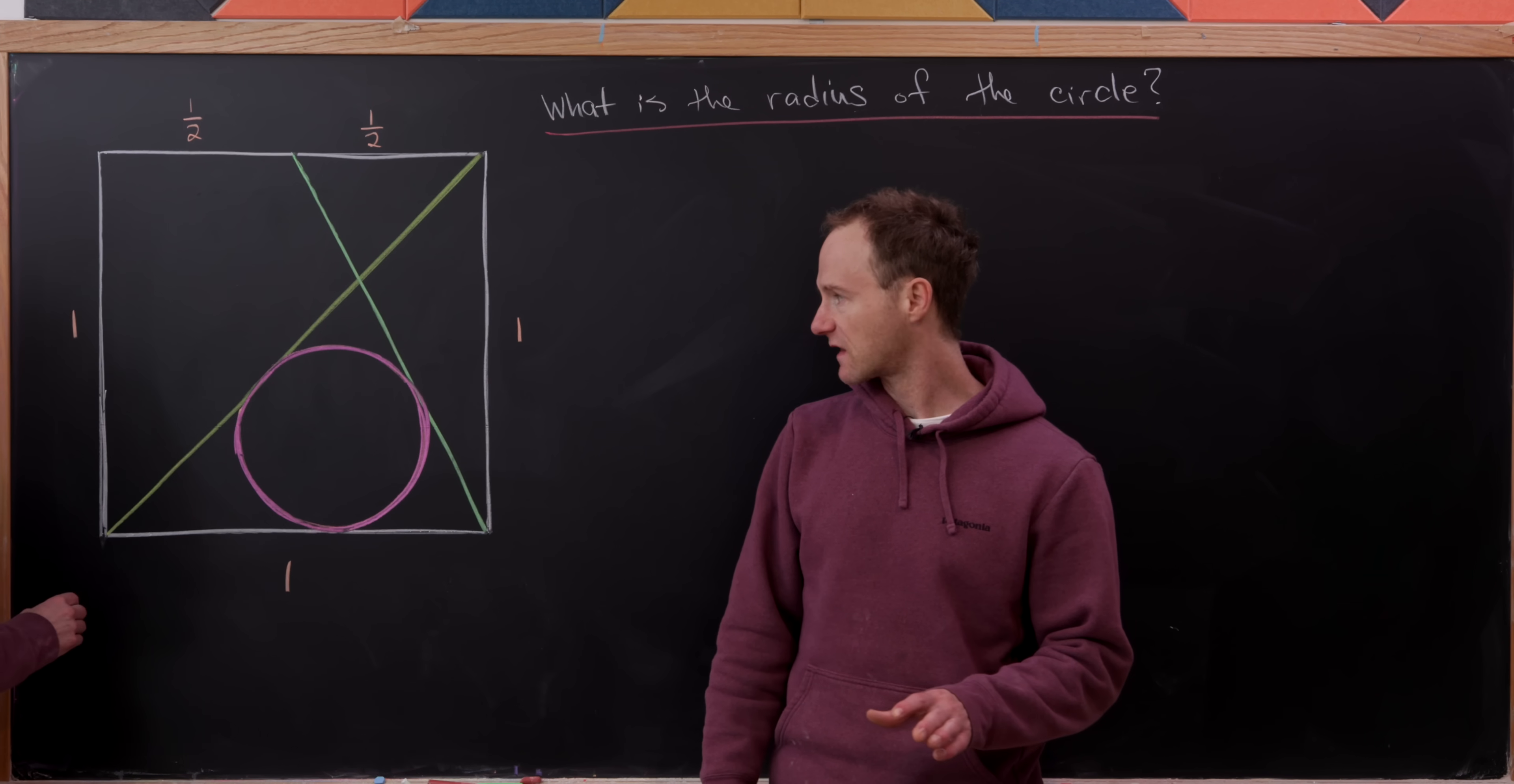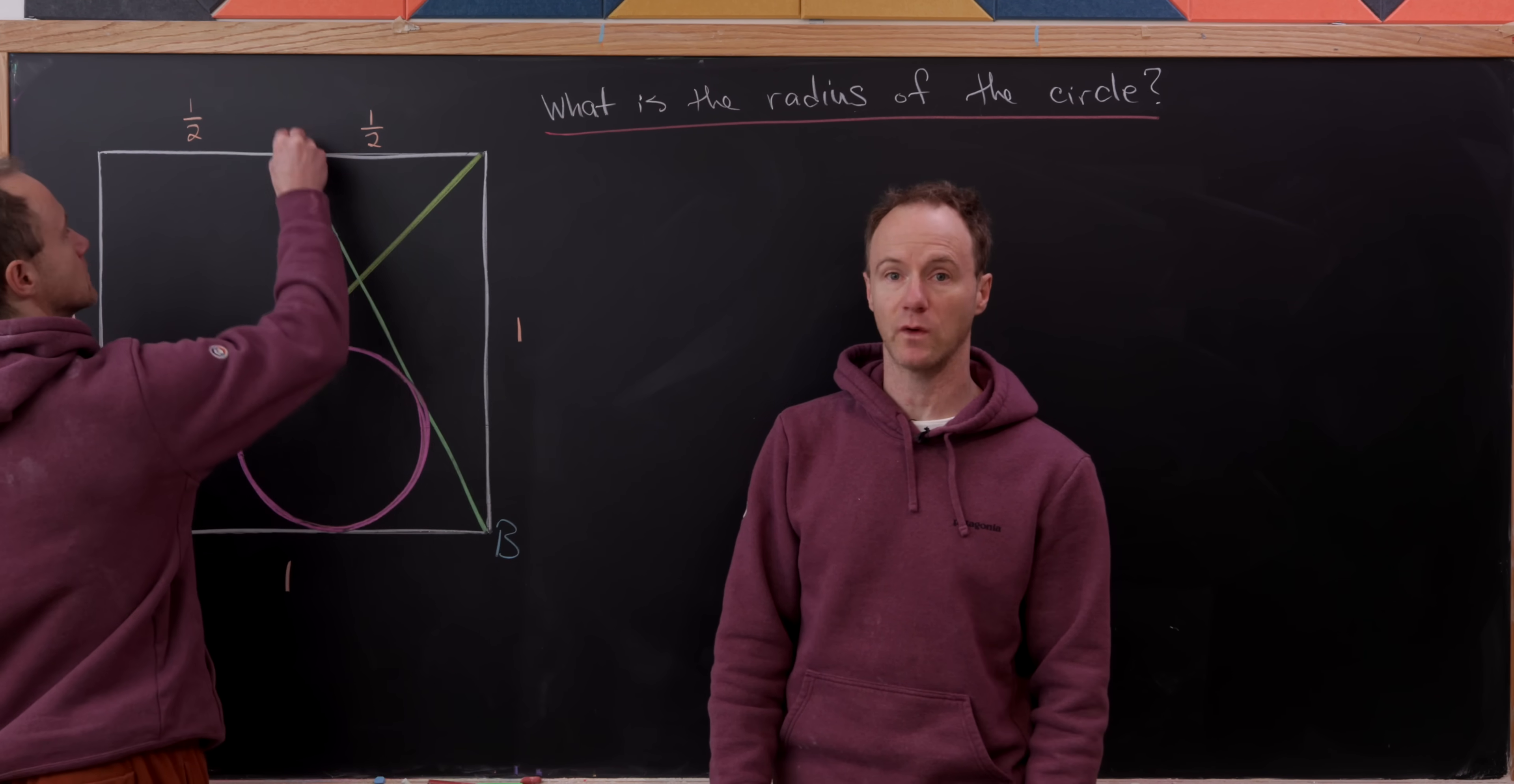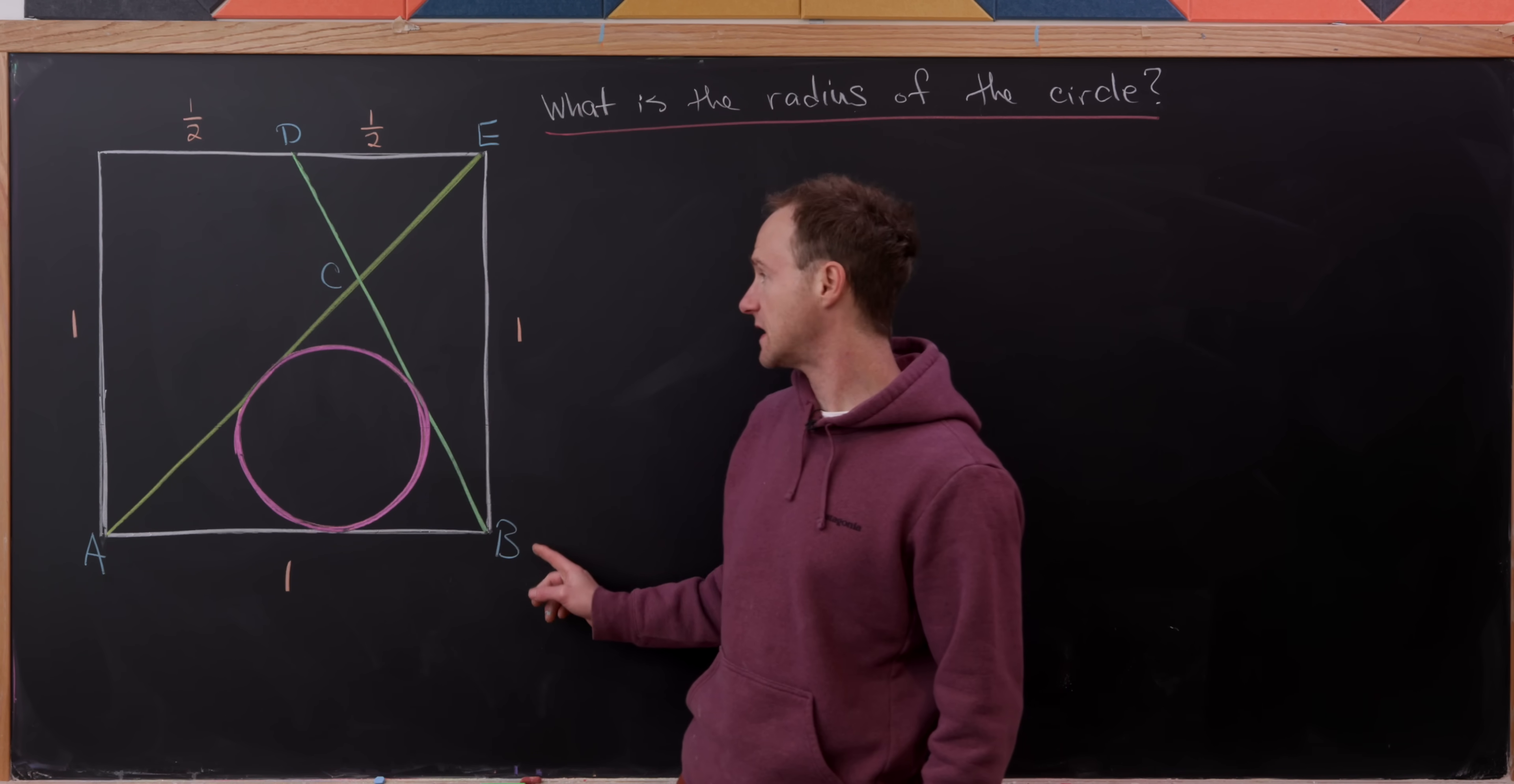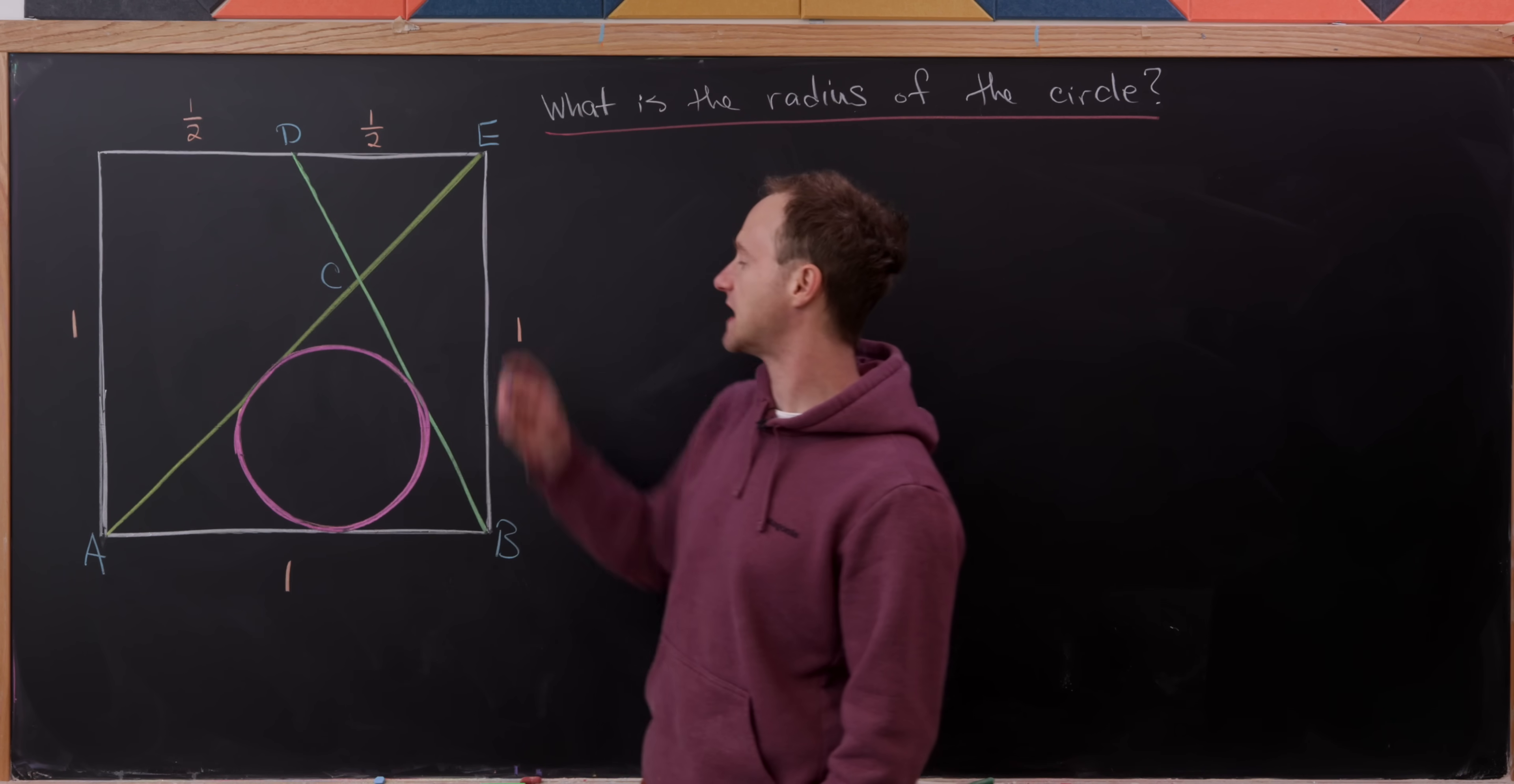The first thing that I'd like to do is give some names to some of these important points. So let's do that. There we have it. I've named this point A, then we have B, the intersection of these two line segments is C, and then we have D and E.